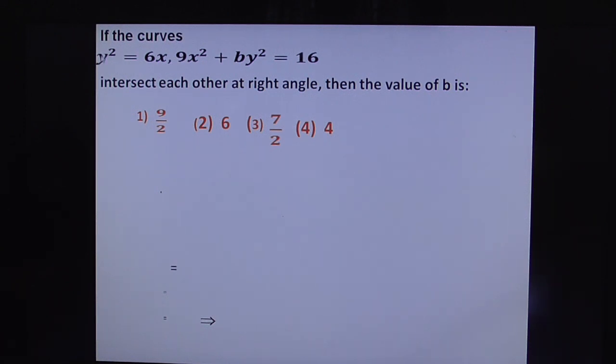First differentiate the first curve y² = 6x. Differentiation of y² gives 2y dy/dx = 6. So dy/dx = 6/(2y), and at point (x₁, y₁) this is 6/(2y₁). Let this be slope M₁.